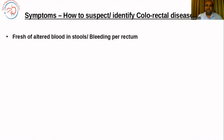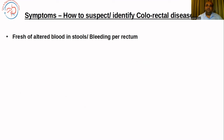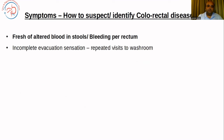How do you suspect or identify colorectal disease? The most common symptom is fresh or altered blood in stools, or bleeding per rectum. Remember that bleeding per rectum is more commonly seen in benign diseases such as fissures and hemorrhoids. If there is painful bleeding, fissure is common. But in the older age group, if you see bleeding, always subject the patient to colonoscopy.